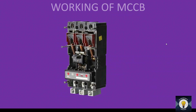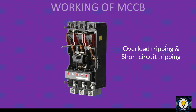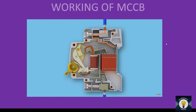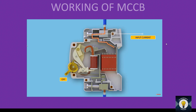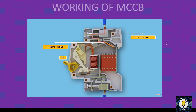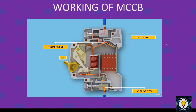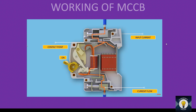If we look at the working of MCCB, we can see it has two types of tripping mechanisms: overload tripping and short circuit tripping. The current flows from the terminals to the fixed contact, through the moving contact, and again to the trip units — going to the bimetallic strip as well as the magnetic unit and then to the outer terminal.